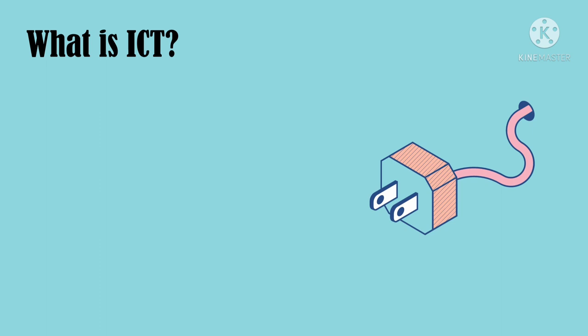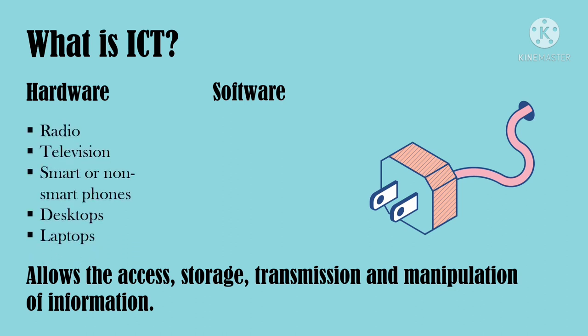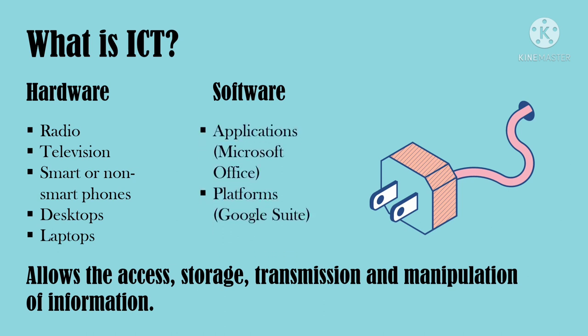Information communication technology, or ICT, is an umbrella term referring to communication hardware or software that allows the access, storage, transmission, and manipulation of information. In terms of hardware, ICT specifically encompasses radio, television, communication devices such as smart and non-smartphones, desktops, computers, laptops, and network hardware and technologies. ICT is also comprised of software, applications, and platforms that allow information to be accessed, stored, transmitted, and manipulated. ICT is used across many industries and disciplines, and in some it is a crucial element. ICT is now a part of many people's lives, for better or for worse.